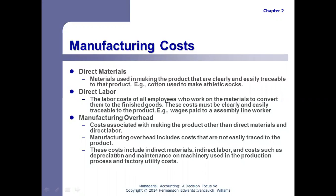Manufacturing overhead costs include indirect materials, indirect labor, depreciation on machinery, maintenance on production machinery, electricity in the factory, et cetera — any costs associated with making the product that are not direct materials or direct labor. In subsequent chapters, we'll see how we charge or allocate these manufacturing overhead costs to the product.